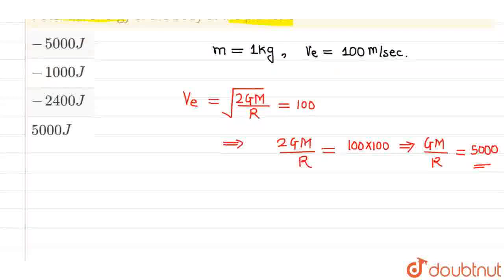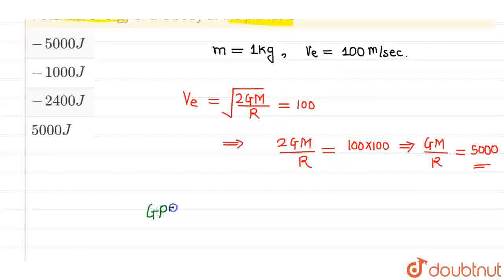Since we have to find out gravitational potential energy, we also know that gravitational potential energy is given as minus GM times m divided by R, where R is the distance between them.